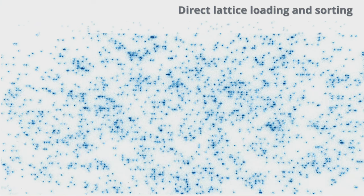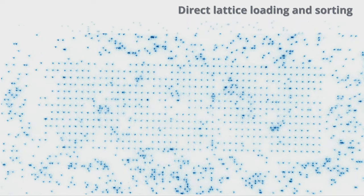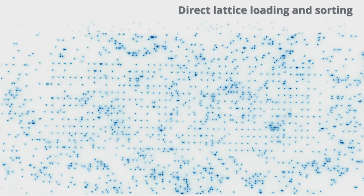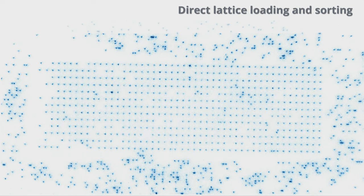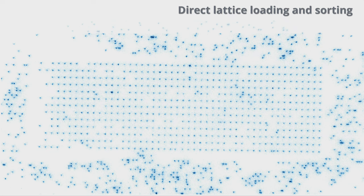One thing we recently demonstrated is loading the lattice with individual atoms and using a single tweezer to shuffle atoms around — almost like a vacuum cleaner — to form large ordered arrays. This is only possible because we can directly load into the lattice, take an image, and then connect with tweezer technology. Prospectively, we can scale these arrays further and pack them more densely.